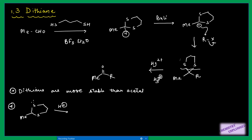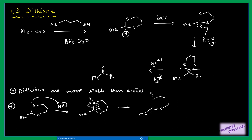To understand why sulfur is less basic: suppose a sulfur gives its lone pair to an acid, and then to stabilize, this sulfur donates its lone pair and the C–S bond breaks, forming a sulfur–carbon double bond. This bond is very weak because it is formed by overlapping the 2p orbital of carbon and the 3p orbital of sulfur — there is poor orbital overlap. That is why sulfur is less basic than oxygen.